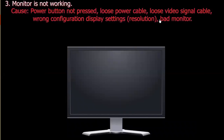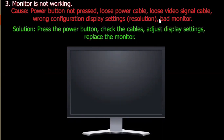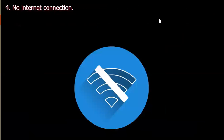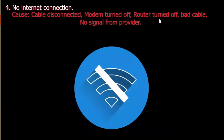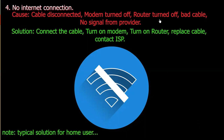Number three: Monitor is not working. Cause: Power button not pressed, loose power cable, loose video signal cable, wrong display configuration settings, or bad monitor. Solution: Press the power button, check the cables, adjust display settings, or replace the monitor. Number four: No internet connection. Cause: Cable disconnected, modem turned off, router turned off, bad cable, or no signal from provider. Solution: Connect the cable, turn on the router, replace the cable, or contact the internet service provider.